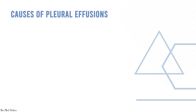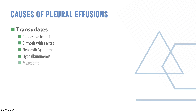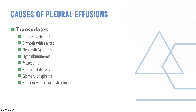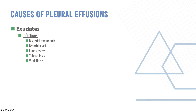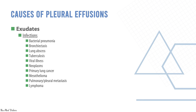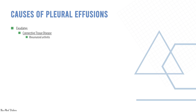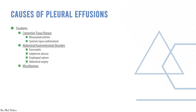Causes of transudative effusions include heart failure, cirrhosis, nephrotic syndrome, hypoalbuminemia, myxedema, peritoneal dialysis, glomerulonephritis, superior vena cava obstruction, and pulmonary embolism. Causes of exudative effusions include bacterial pneumonias, bronchiectasis, lung abscesses, tuberculosis, viral infections, neoplasms (mesotheliomas, lung cancers, pulmonary metastases, lymphomas), connective tissue disorders like rheumatoid arthritis and SLE, GI disorders like pancreatitis, subphrenic abscesses, esophageal rupture, and abdominal surgery, as well as miscellaneous causes such as pulmonary infarction, uremia, drug reactions, postpartum state, and chylothorax.